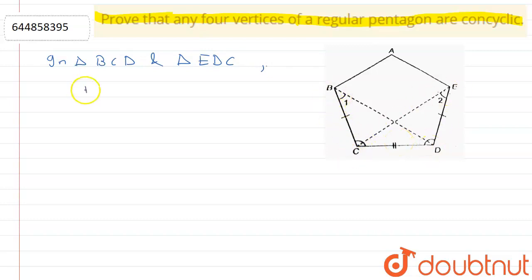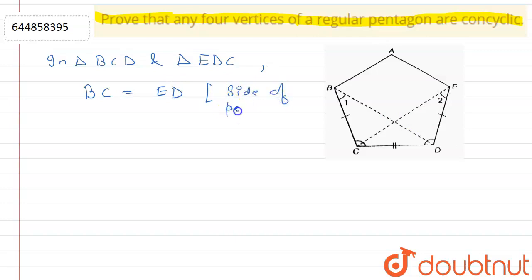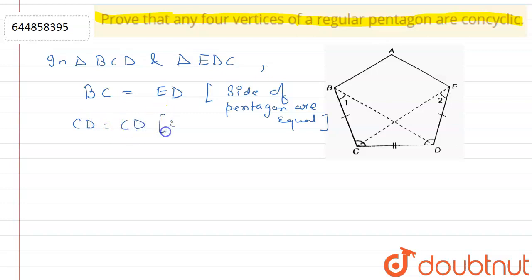BC equals AD because sides of a pentagon are equal. Now CD is common in both triangles, so we say that CD equals CD — common.